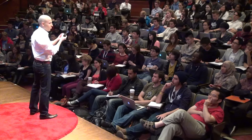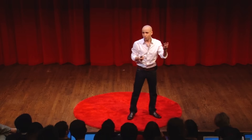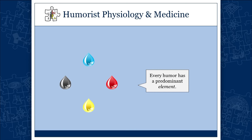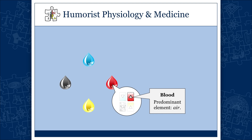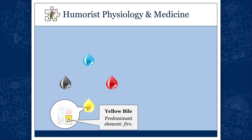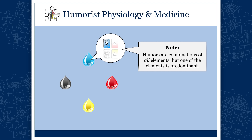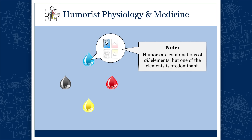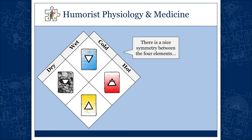Every human has a predominant element, and this explains why there must be four fluids — because everything is composed of four elements, the only thing that can differ between any two humors is the predominant element. When the predominant element is air, you get blood. When it's fire, you get yellow bile. When it's earth, you get black bile. And for phlegm, the predominant element is water. By virtue of their corresponding elements, humors are characterized as dry or wet, hot or cold — a nice symmetry between the four elements and the four humors.